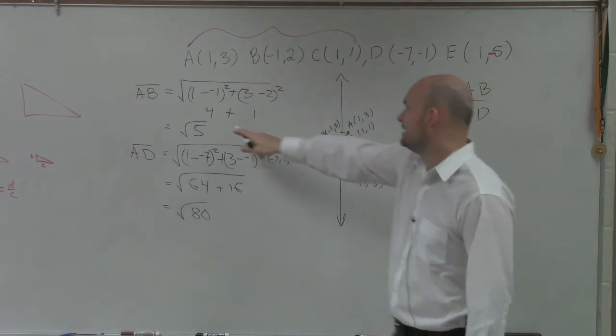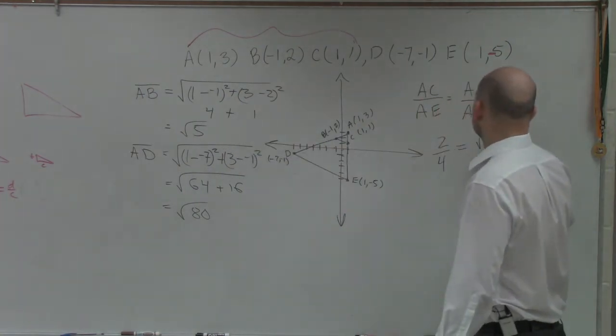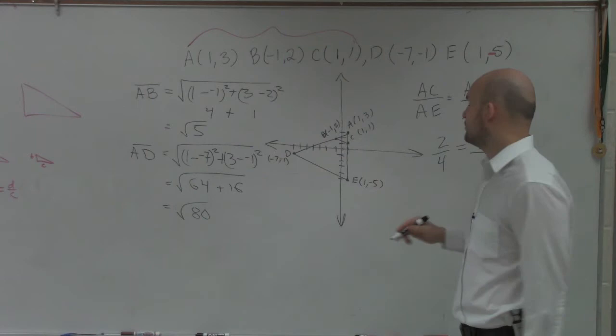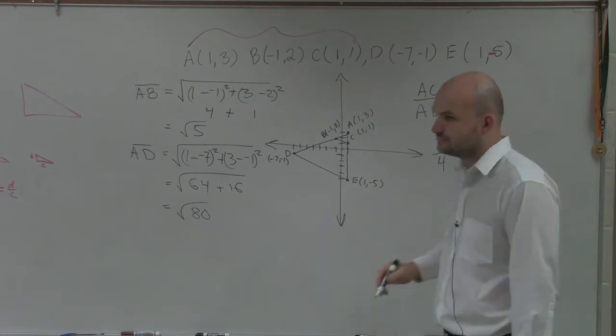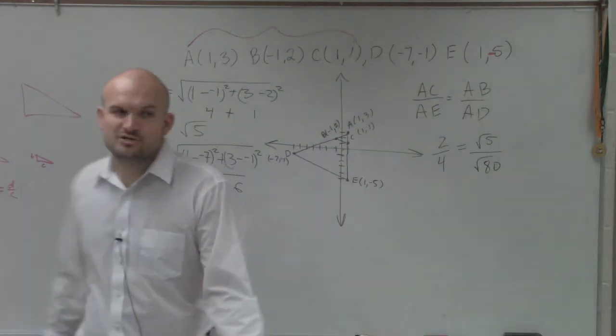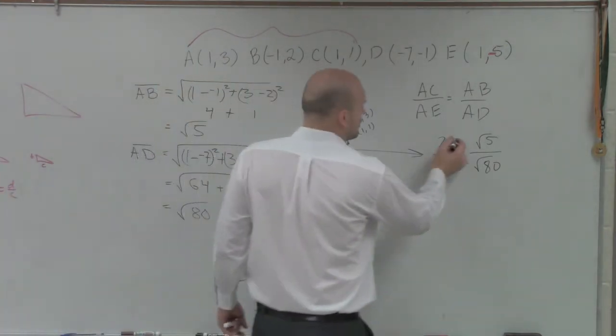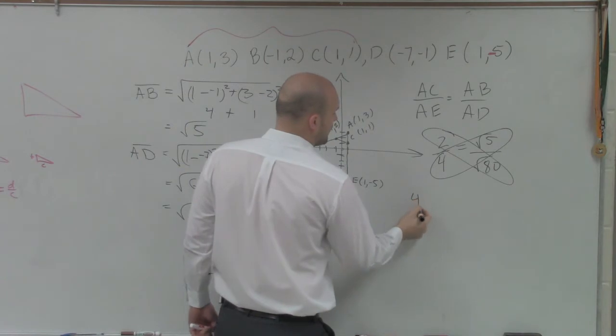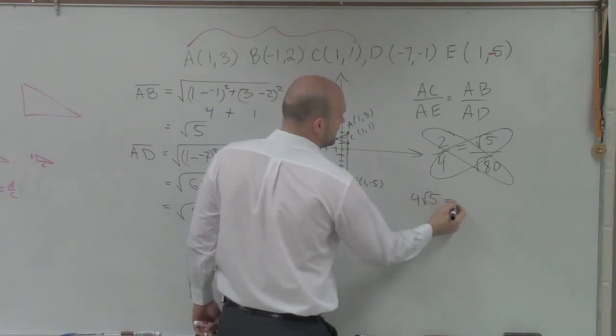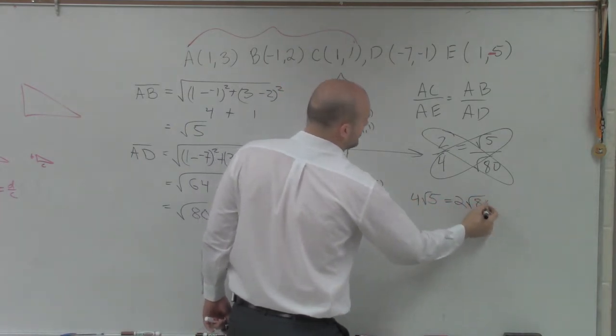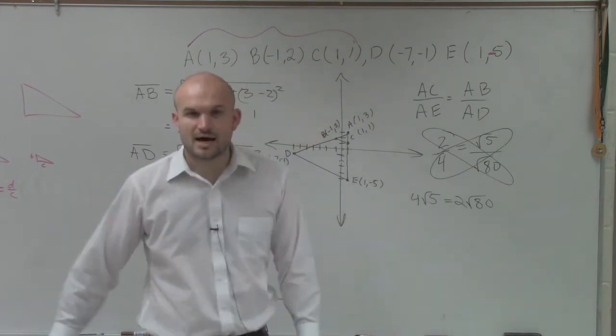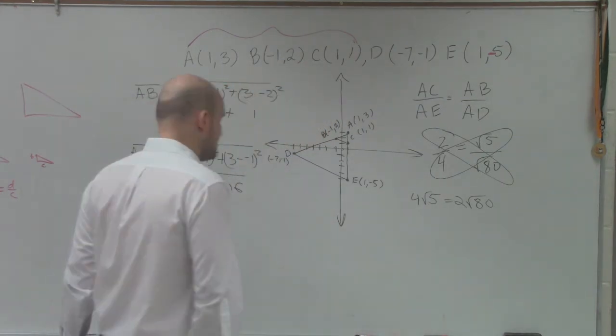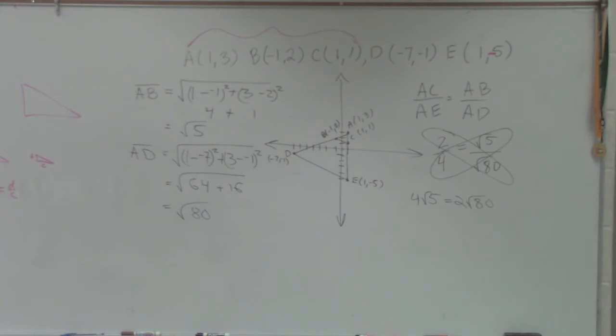And now, AB is square root of 5 over the square root of 80. So now, how do we show that they're proportional to each other? Cross multiply. So I have 4 times the square root of 5 equals 2 times the square root of 80. So now, what I can simply do is just use my calculator to estimate them or calculate.